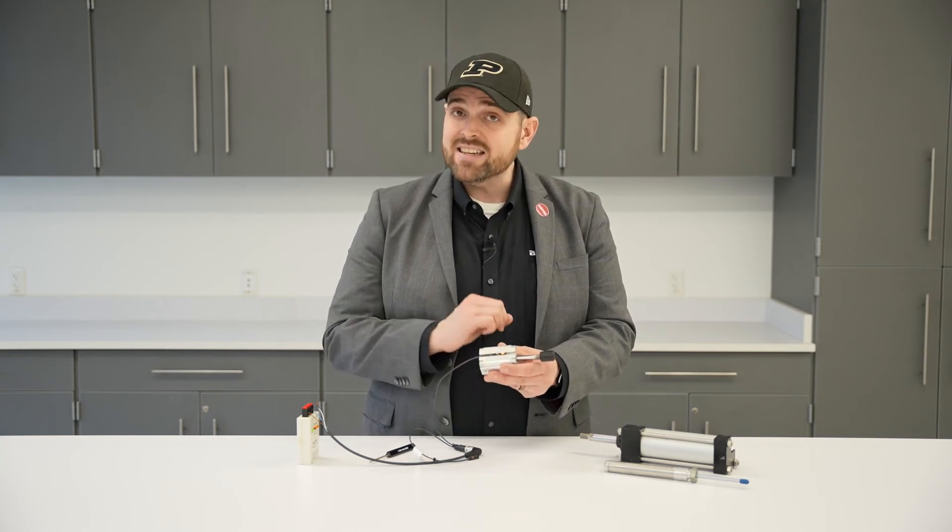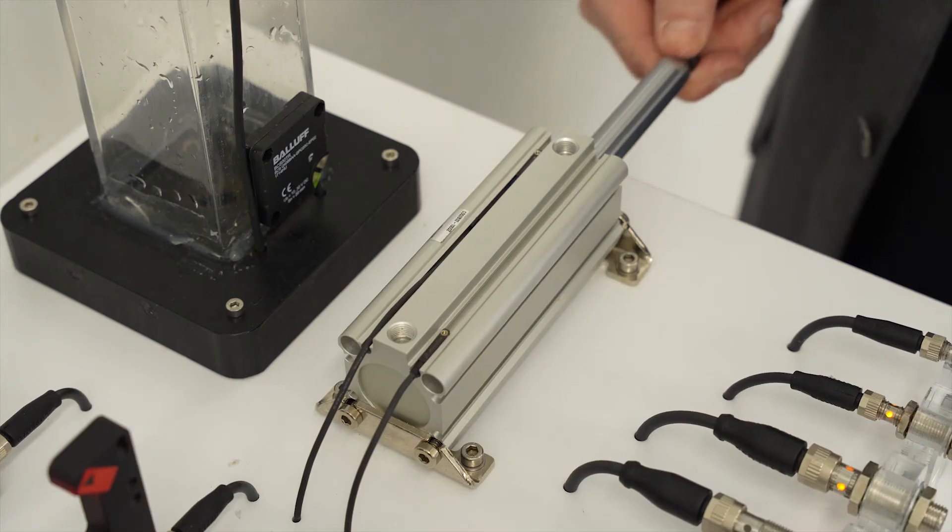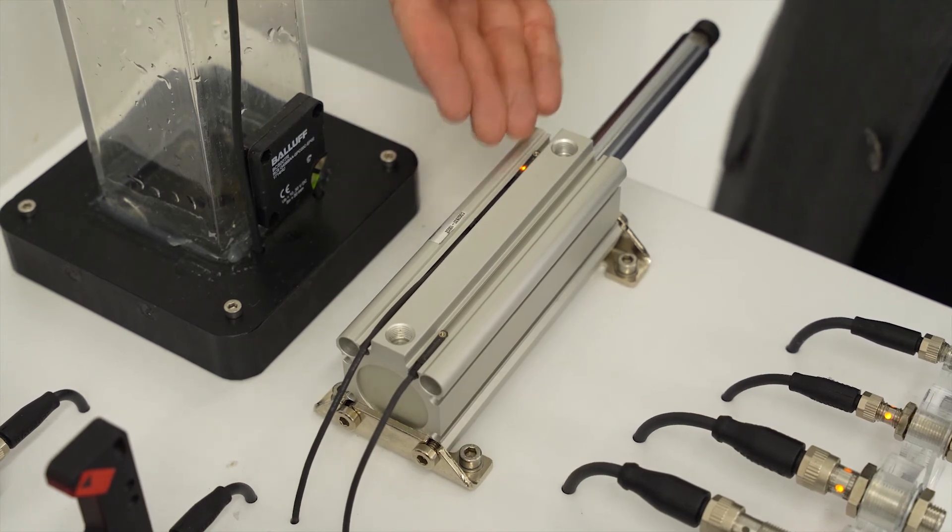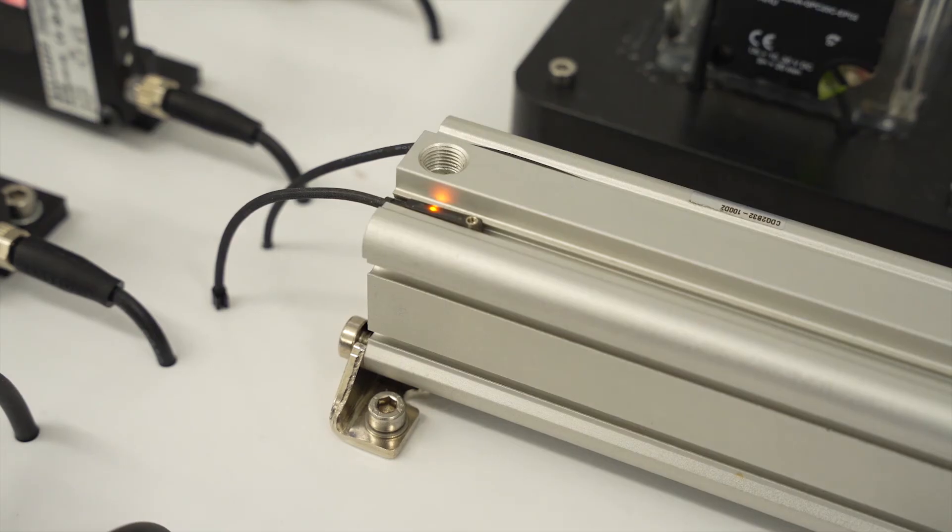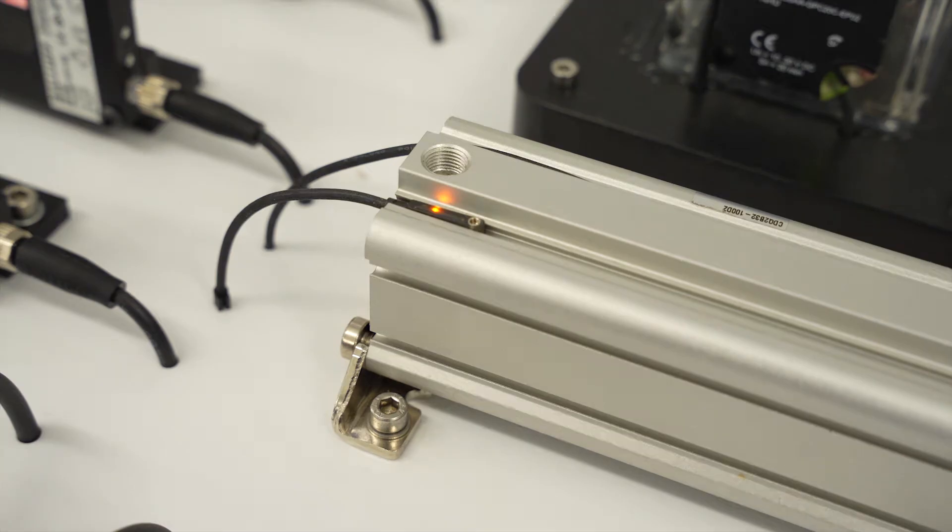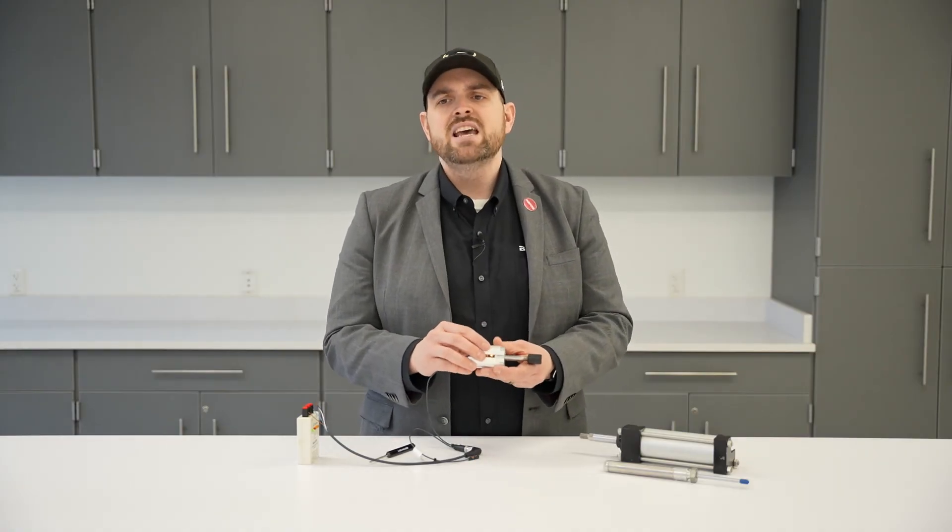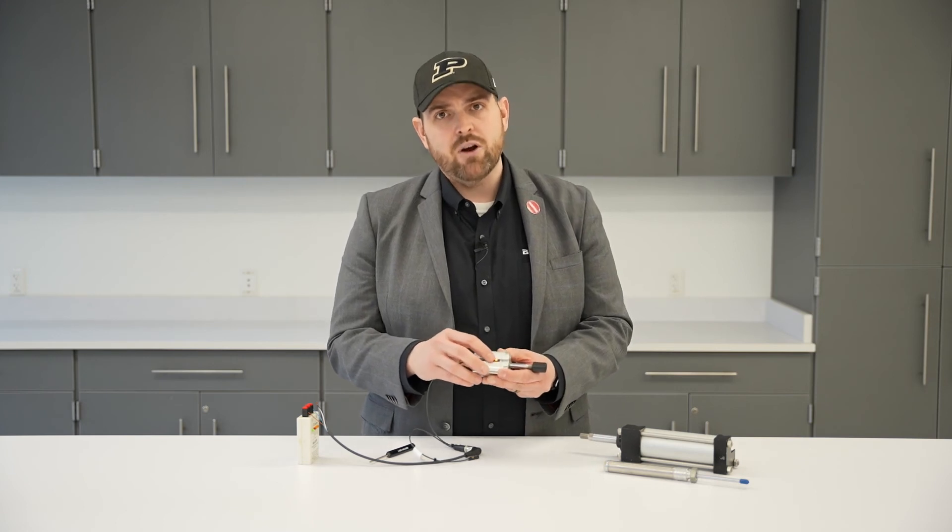This is non-contact sensing, sensing through the wall of the cylinders. There's not any motion or anything like that. And then this universal compatibility for the mounting, so it mounts in most T-slots and C-slots of modern cylinders and most cylinder brands.